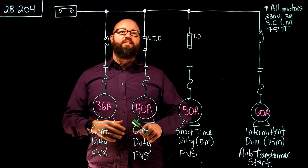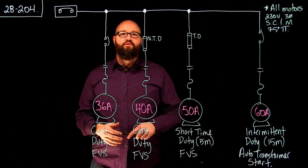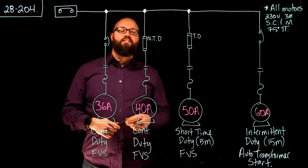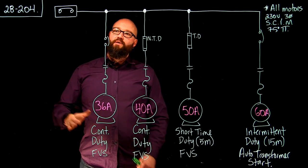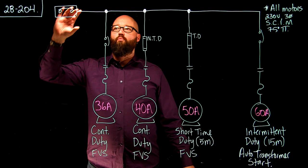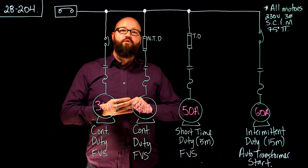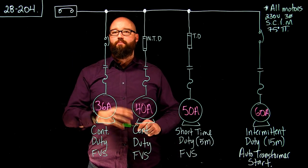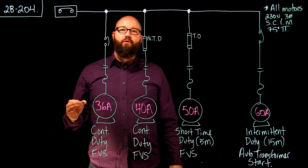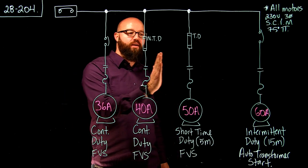Rule 28204 is a little bit difficult to interpret, so I'm going to break it down into an easy interpretation. What it effectively says is: when we protect all of our individual motor branch circuits with one main overcurrent device, we are going to go to Table 29, and we are going to apply the multiplying factor from Table 29 to each one of these motors.